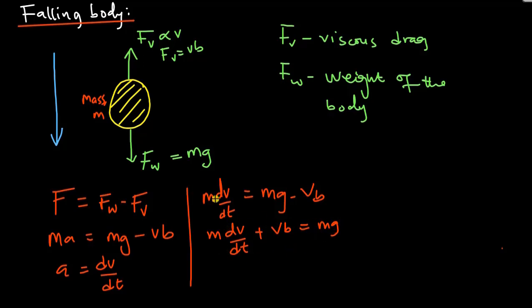But we know that as the time of falling increases, there reaches a point where the body is not accelerating. At that point, which is known as the equilibrium point, the change of velocity with respect to time becomes 0, and the body moves with the velocity known as the terminal velocity.